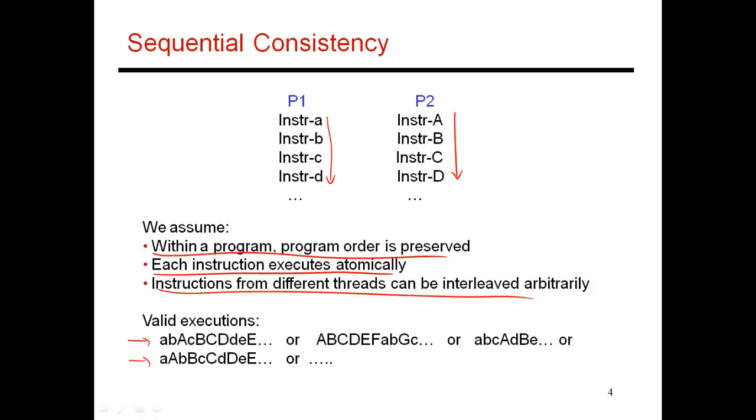So in the next cycle, in this case, I could be doing small a, then I could be doing small b, then I could be doing capital A, then small c, and so on. So in any cycle, I could pick an instruction from either P1 or P2. But within P1, I'm always going to preserve program order. So that's why I did small a, small b, small c, small d, small e. And likewise, I did capital A, capital B, capital C, capital D, capital E. So in all these examples, you'll see that within a thread, I'm preserving program order. But in the next cycle, executing an instruction from either thread is fair. So these are all the assumptions that I usually make.